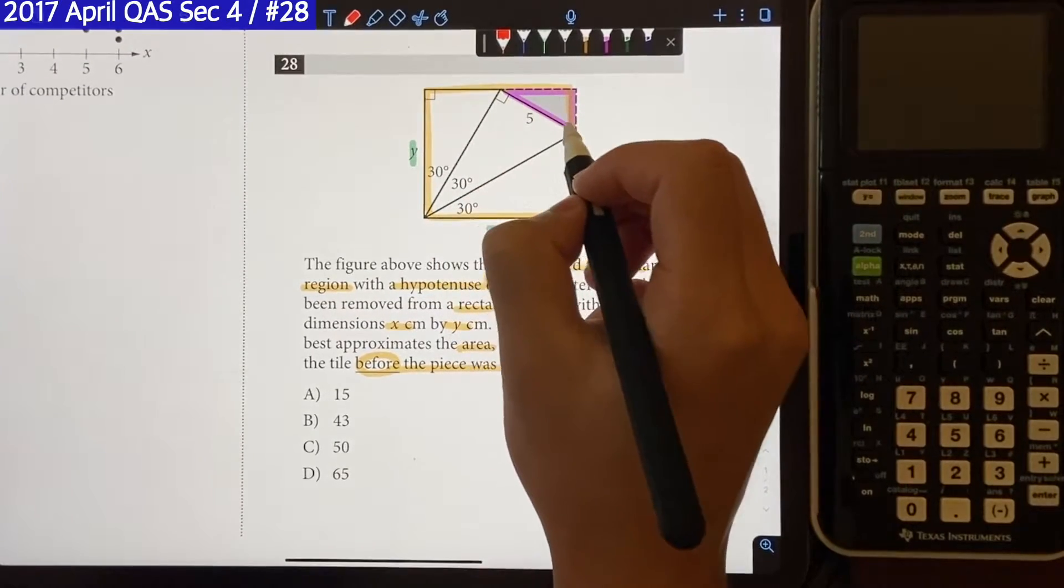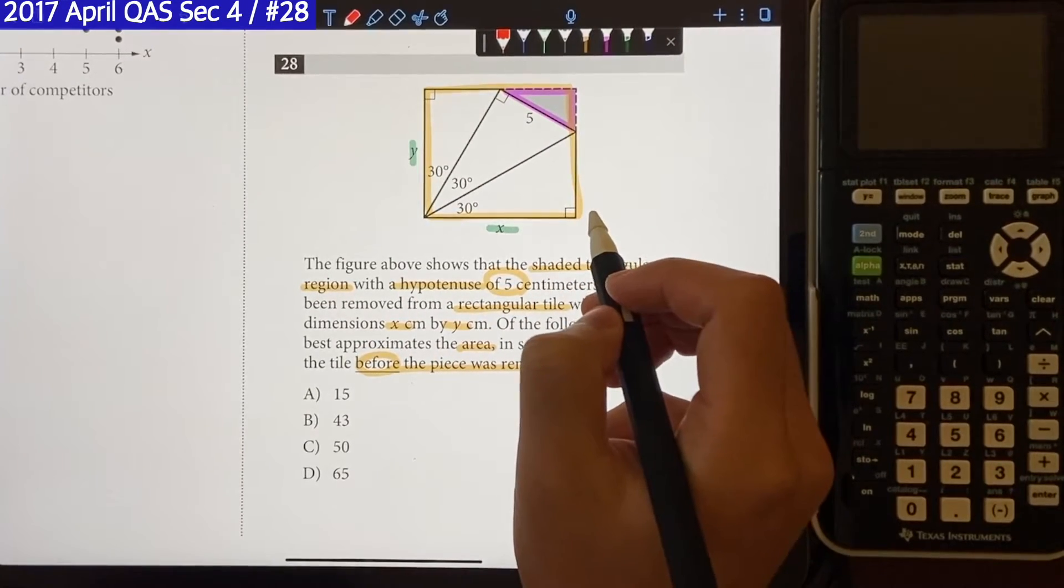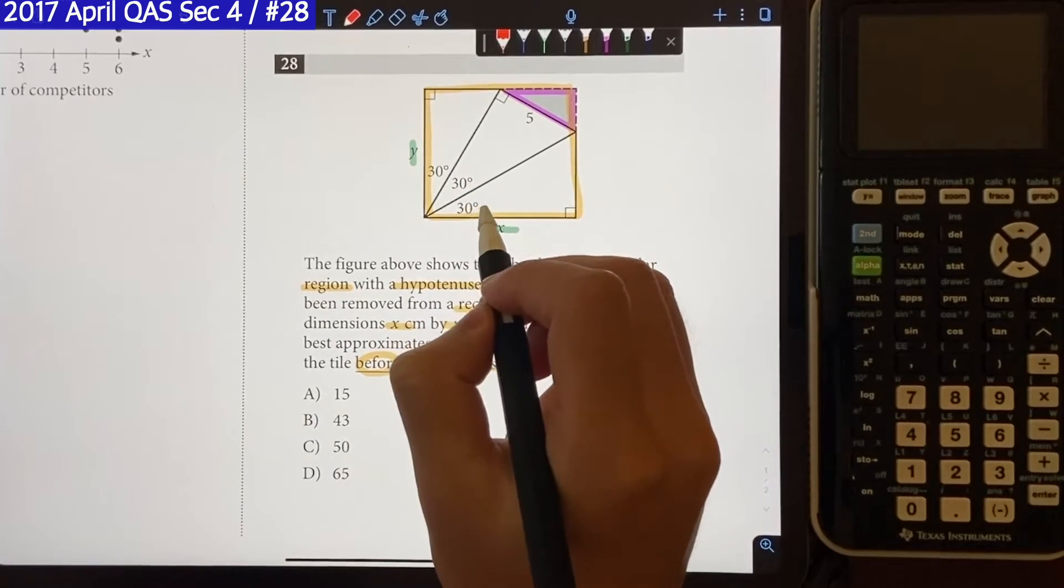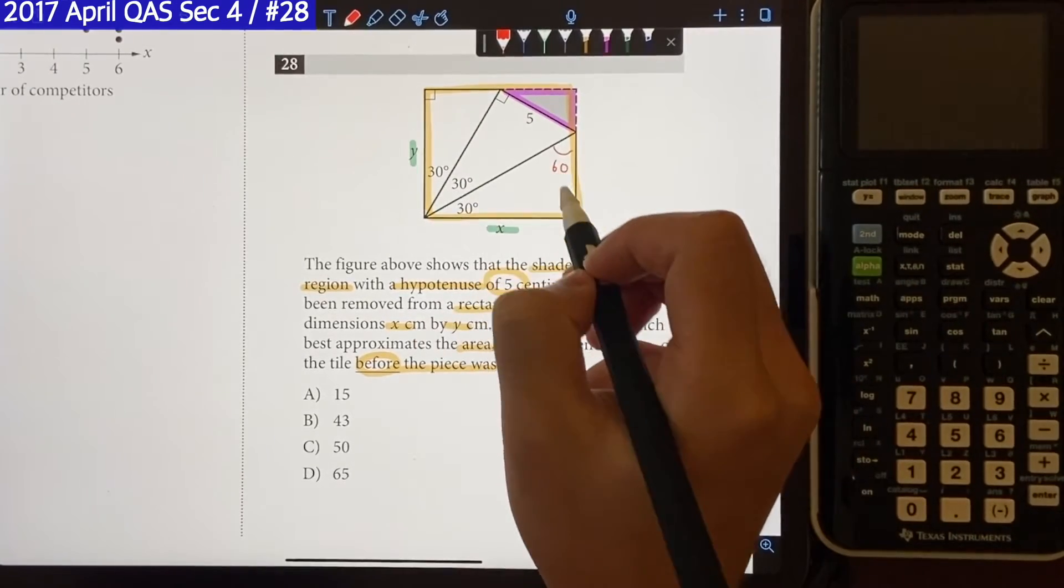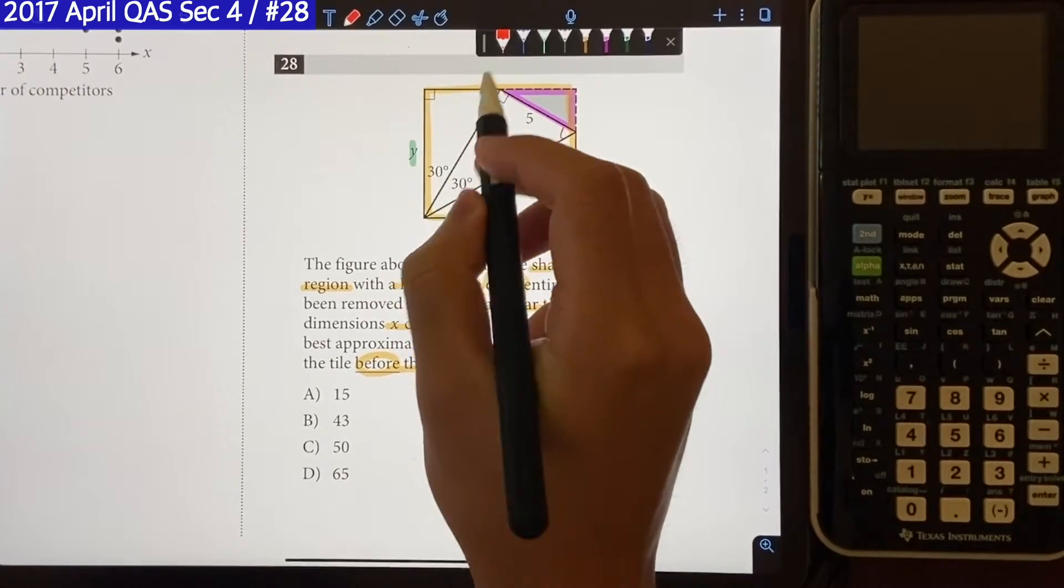Well, the question gives us the side length of 5 right there, and we can see that we are working with three right triangles with angle of 30, 30, 30. And the fact that we have 30 and 90 right here, that means this angle right here is going to be 60, because 30, 60, 90 special right triangle. And that goes the same for every single one of these triangles.